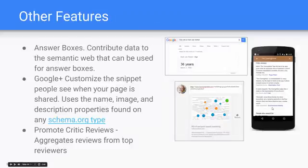Some other features: answer boxes. We're seeing this more and more consistently, where Google's trying to answer your question directly in the search results. Here you can see the example of asking how old is Mark Van Berkel. While structured data on the website contributes to this, there are other elements that come together to help Google create these answers. So it's no guarantee, but by adding structured data to your website, you can contribute to Google putting together answers for answer boxes.